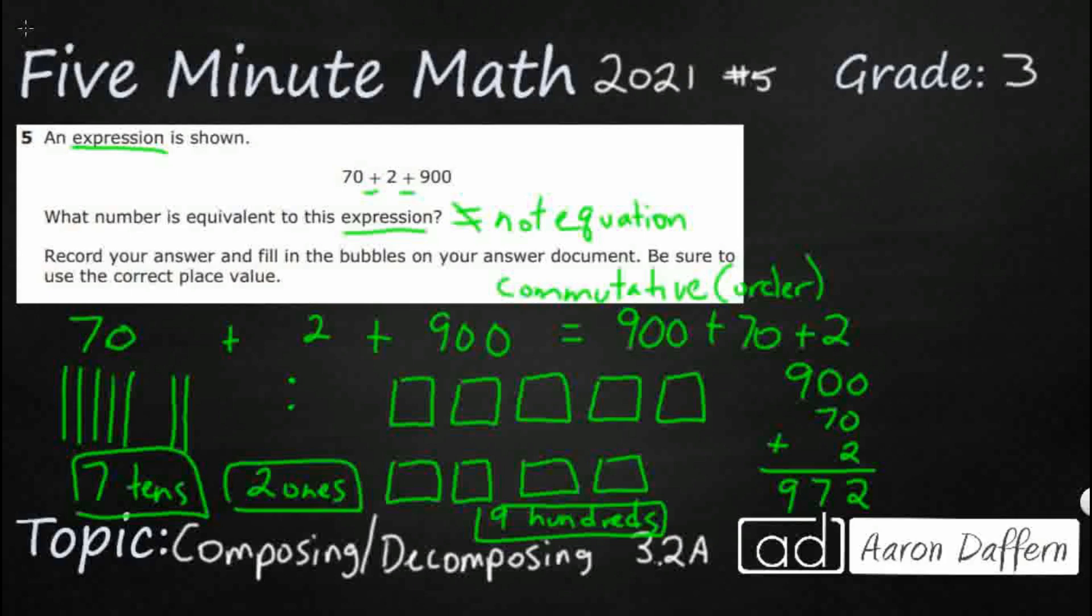Now, how do we answer this? Because there is no A, B, or C. Well, it's going to be what we call griddable response or free response. So you're going to have three columns here. And then the top row, you're just going to hand draw in your numbers. So make sure you line it up correctly, 972.